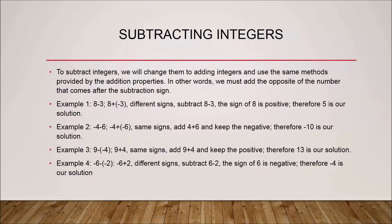To subtract integers, all we have to do is change the subtraction to addition and use the same properties from the addition case. In other words, we add the opposite of the number that comes after the subtraction sign. For instance, eight minus three becomes eight plus negative three. The two signs are different, so we do eight minus three, which equals five.